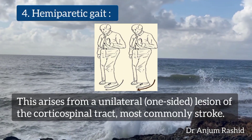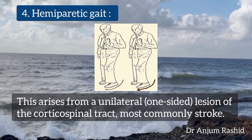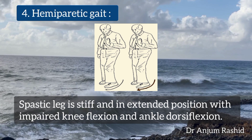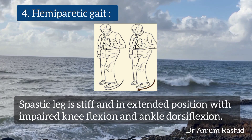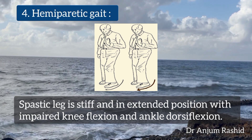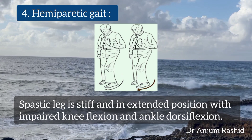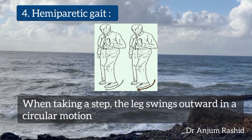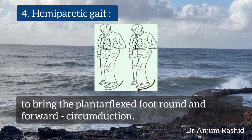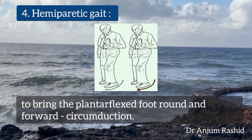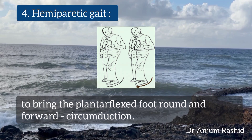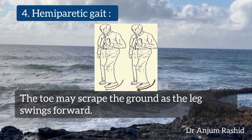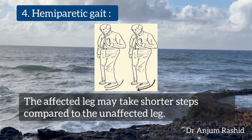The fourth type is hemiparetic or hemiplegic gait. This arises from a unilateral lesion of the corticospinal tract, most commonly due to stroke. The spastic leg is stiff and held in an extended position with impaired knee flexion and ankle dorsiflexion. When taking a step, the leg swings outward in a circular motion to bring the plantar-flexed foot around and forward — this is called circumduction. The toe may scrape the ground as the leg swings forward.